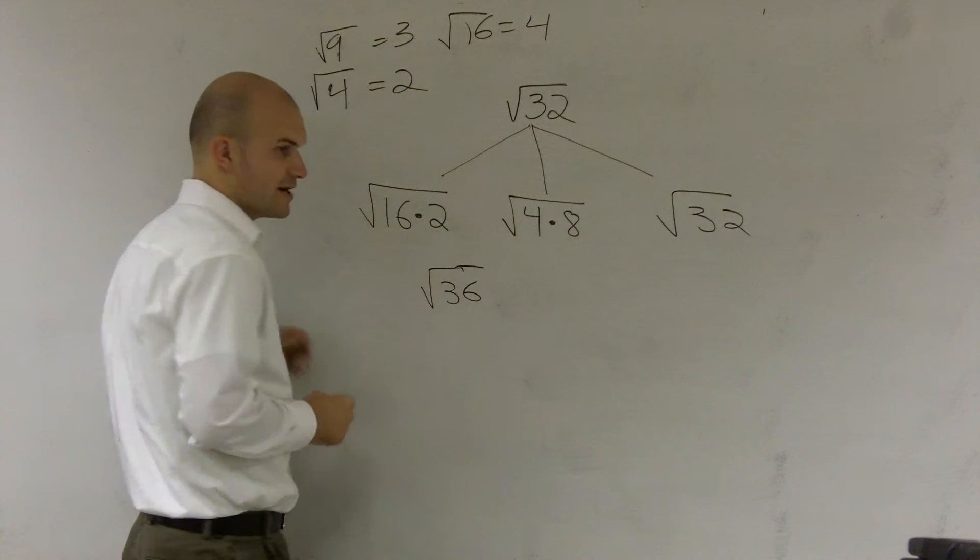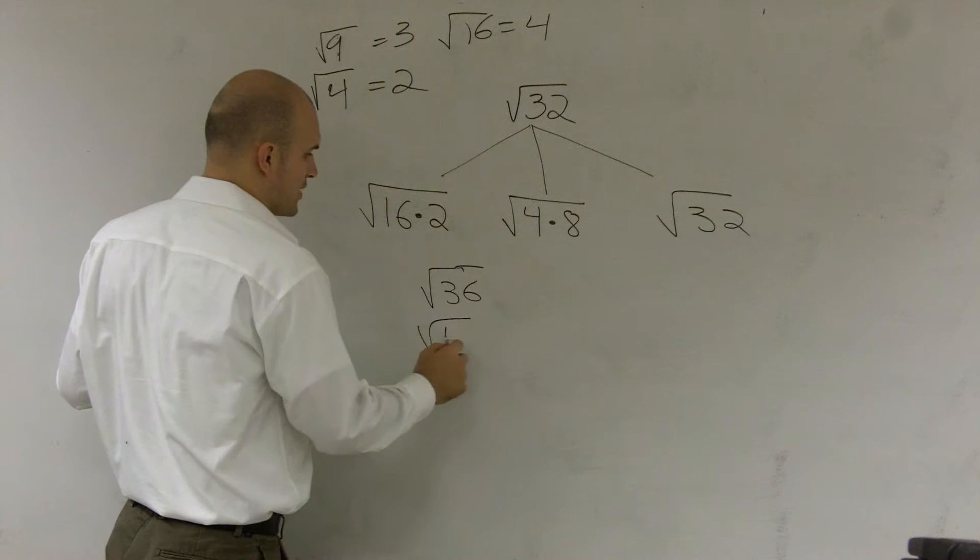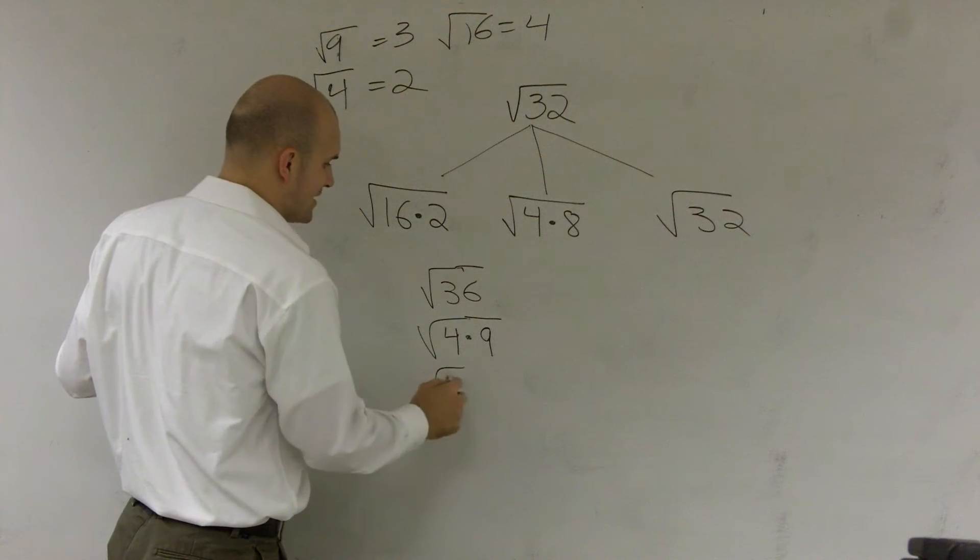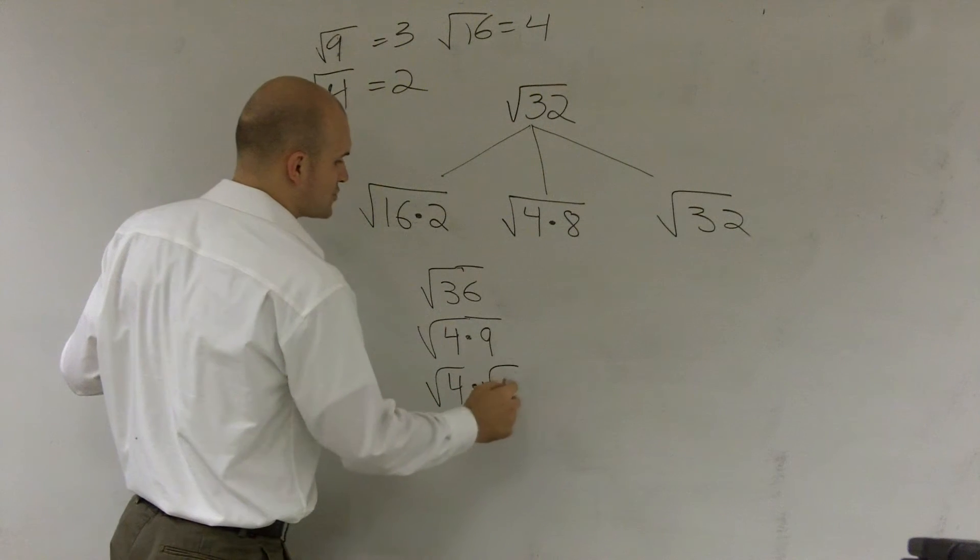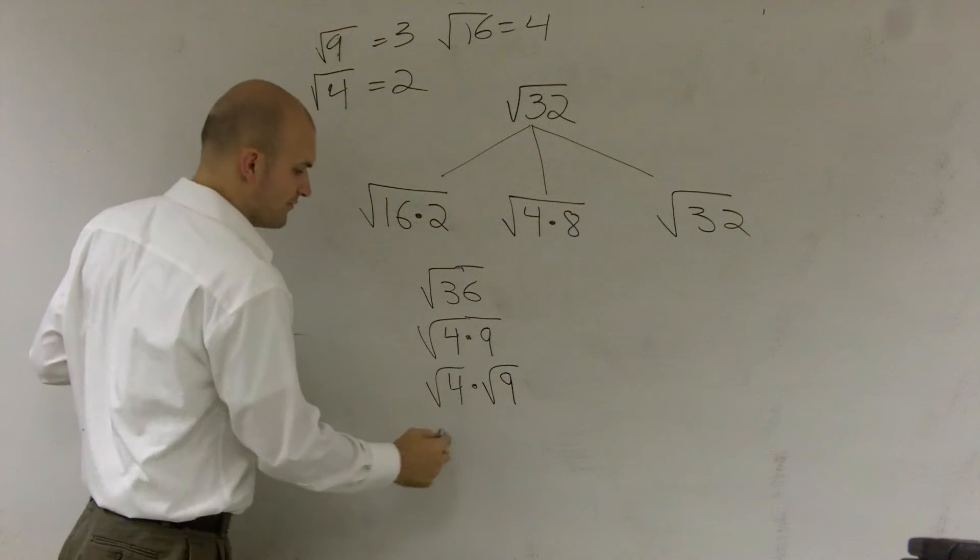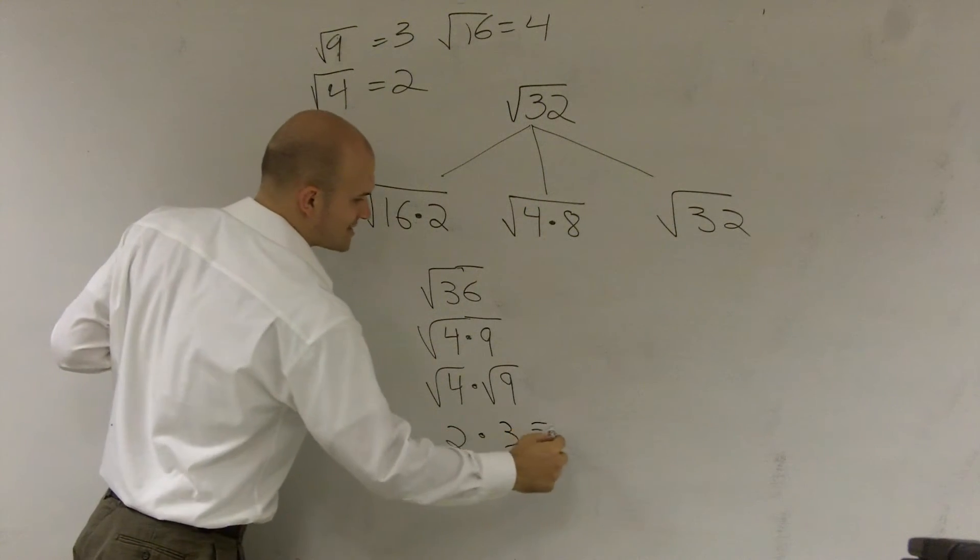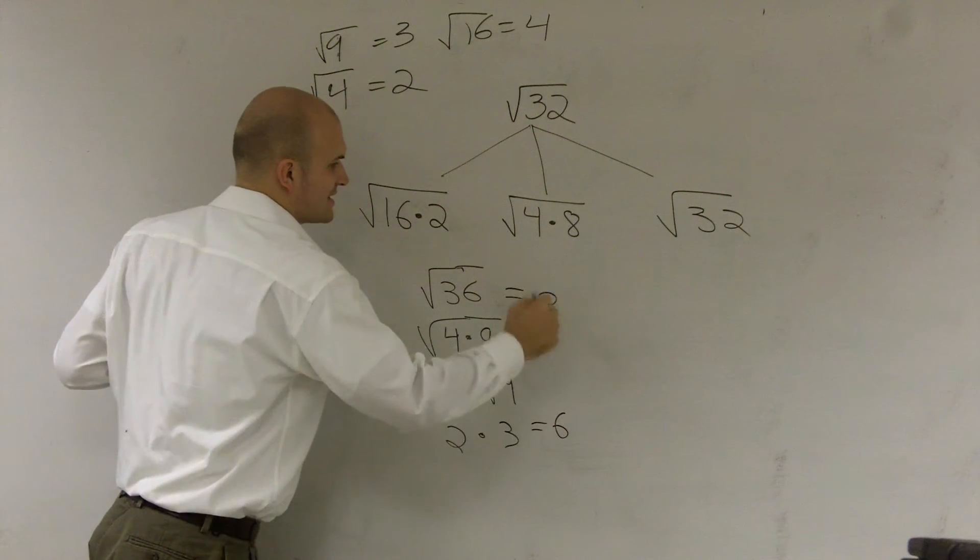The square root of 36 can be broken down into the square root of 4 times 9. 4 times 9 is 36. We can rewrite that as the square root of 4 times the square root of 9. The square root of 4 is 2. The square root of 9 is 3. 2 times 3 is equal to 6. The square root of 36 is equal to 6.